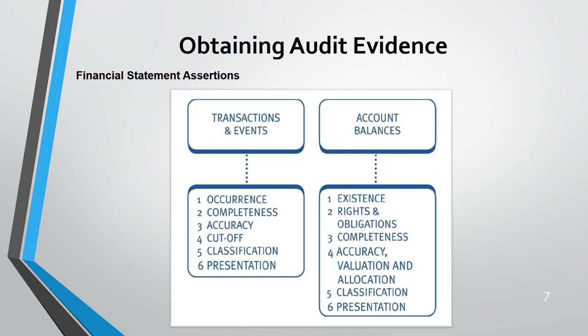Financial statement assertions — there are six for transactions and events (your profit and loss account) and for account balances (your statement of financial position). For transactions: occurrence, completeness, accuracy, cutoff, classification, and presentation. For account balances: existence, rights and obligations, completeness, accuracy, valuation and allocation, and classification and presentation. Some are similar — for example completeness and accuracy apply to both, while cutoff is only for transactions and occurrence is only for transactions.